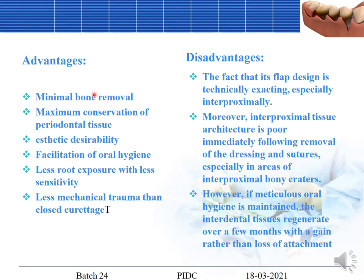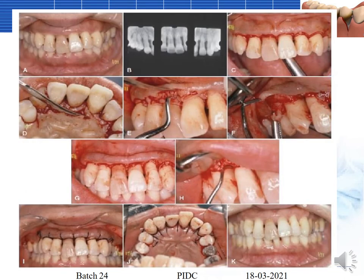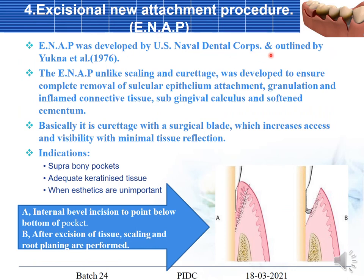The main advantages of the modified Widman flap are minimal bone removal, conservation of tissues with better aesthetics, facilitation of oral hygiene, less root exposure with less sensitivity, and less mechanical trauma than close curettage. The disadvantage is that the procedure is technically demanding and interproximal tissue architecture is poor immediately following removal of sutures and dressing, especially in areas with interproximal bony craters. However, if patient oral hygiene is maintained, interdental tissues can regenerate.